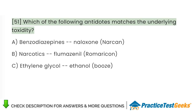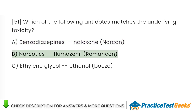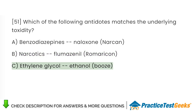Which of the following antidotes matches the underlying toxicity? A. Benzodiazepines — naloxone, Narcan. B. Narcotics — flumazenil, Romazicon. C. Ethylene glycol — ethanol.